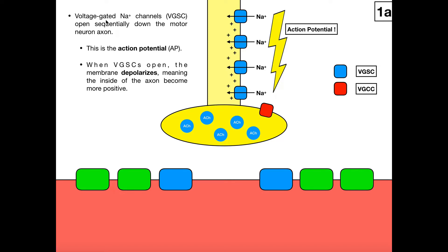The action potential is literally the opening of voltage-gated sodium channels that open sequentially down the motor neuron axon. This first one in blue is one of our voltage-gated sodium channels. This would open and it would allow sodium to influx from the extracellular fluid into the cytoplasm of the axon. When this sodium influxes, there's going to be some positive charges that build up. Those positive charges are going to be sensed by the next voltage-gated sodium channel, which will then induce it to open, allowing more sodium to influx. This process repeats, giving you unidirectional opening of voltage-gated sodium channels down the motor neuron axon, ultimately toward the synaptic end bulb — and this is the action potential.